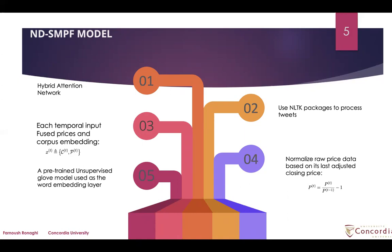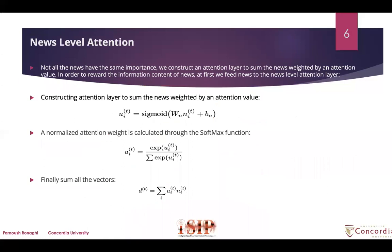The available messages are provided as input to a message embedding layer. Each word within the news corpus uses a word embedding layer to calculate the embedding vector, which is then averaged across all word vectors to construct a news vector. A pre-trained unsupervised GloVe model is used as the word embedding layer. Not all news items have the same importance, so we construct an attention layer to sum the news weighted by an attention value.